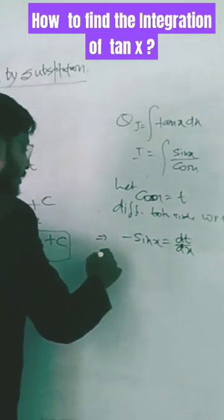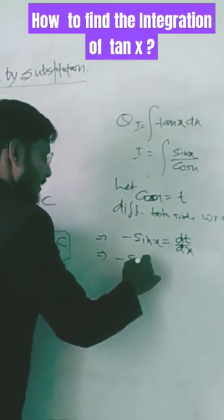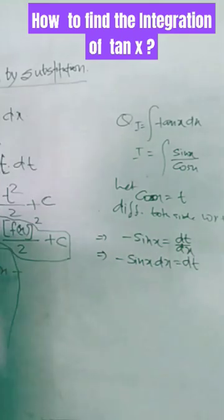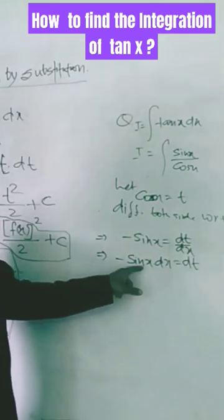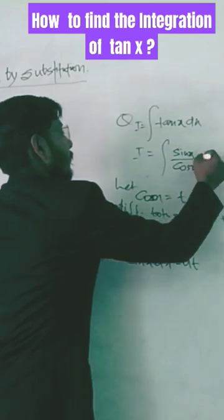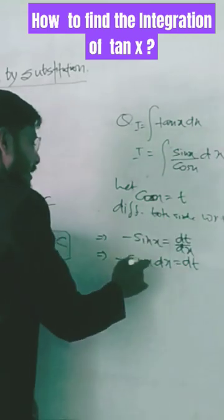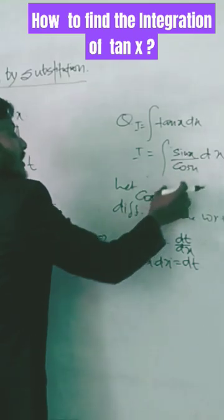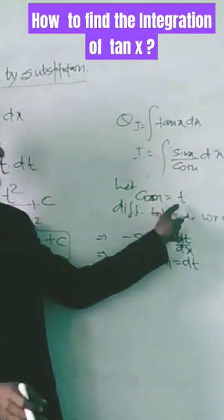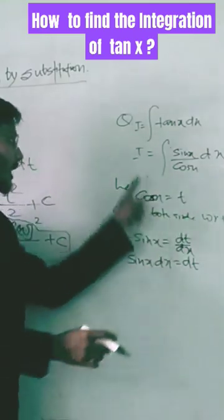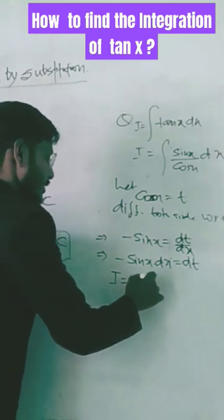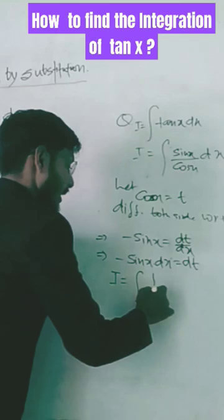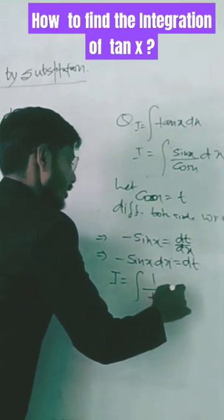We can write this as minus sin x into dx equals dt. Now see here that sin x into dx can be written as dt in the question and cos x is assumed t. So we can write the above question as integration of 1 by t dt.